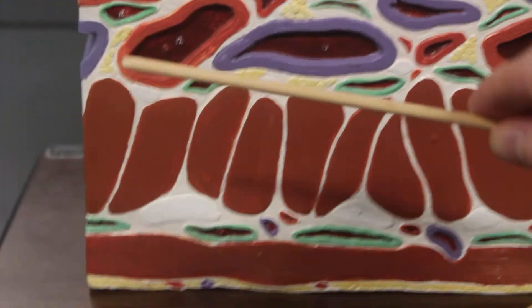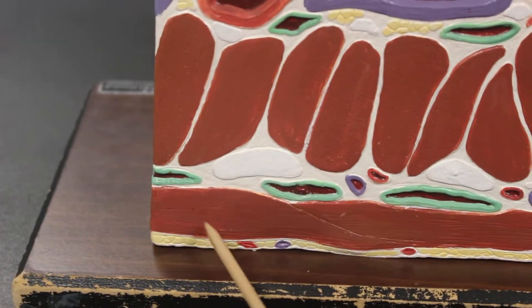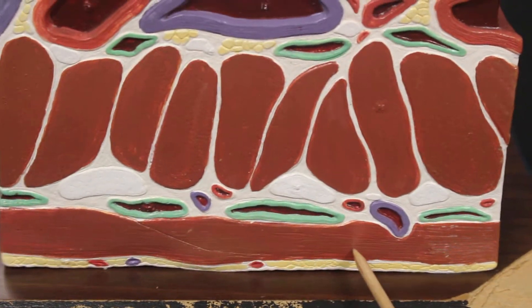Below the submucosal layer is the muscularis layer. This is all muscularis layer, including the circular muscles that wrap around and the longitudinal muscles going along the length.